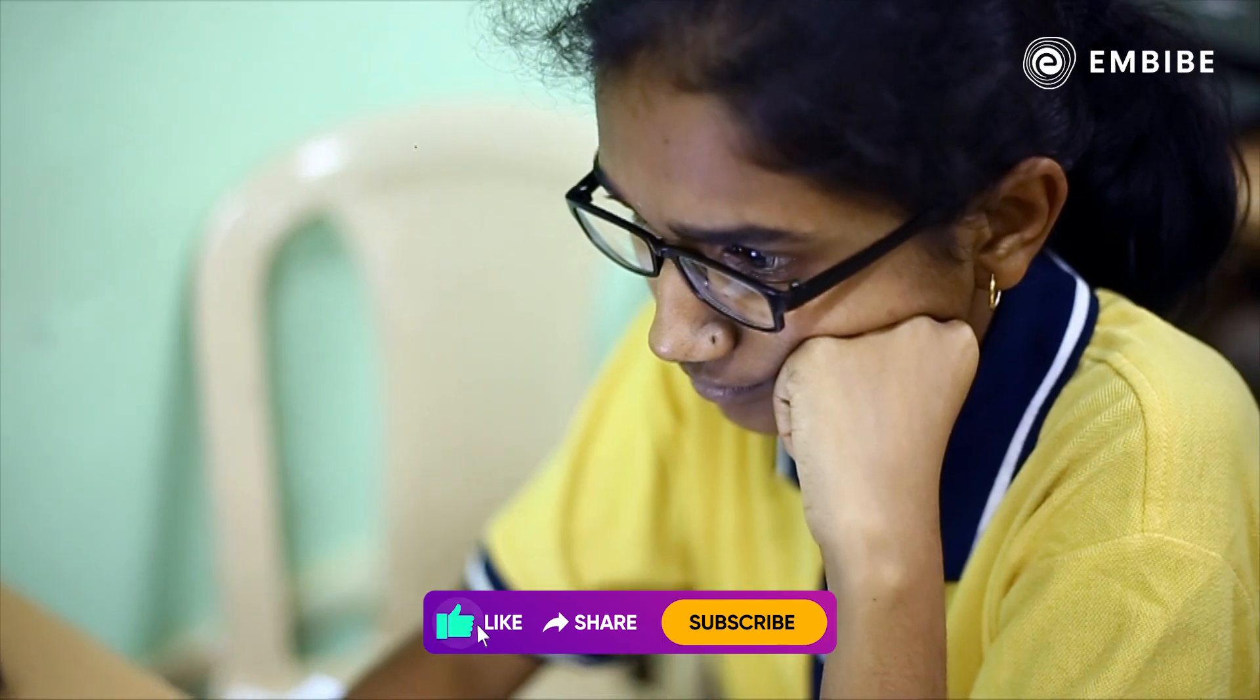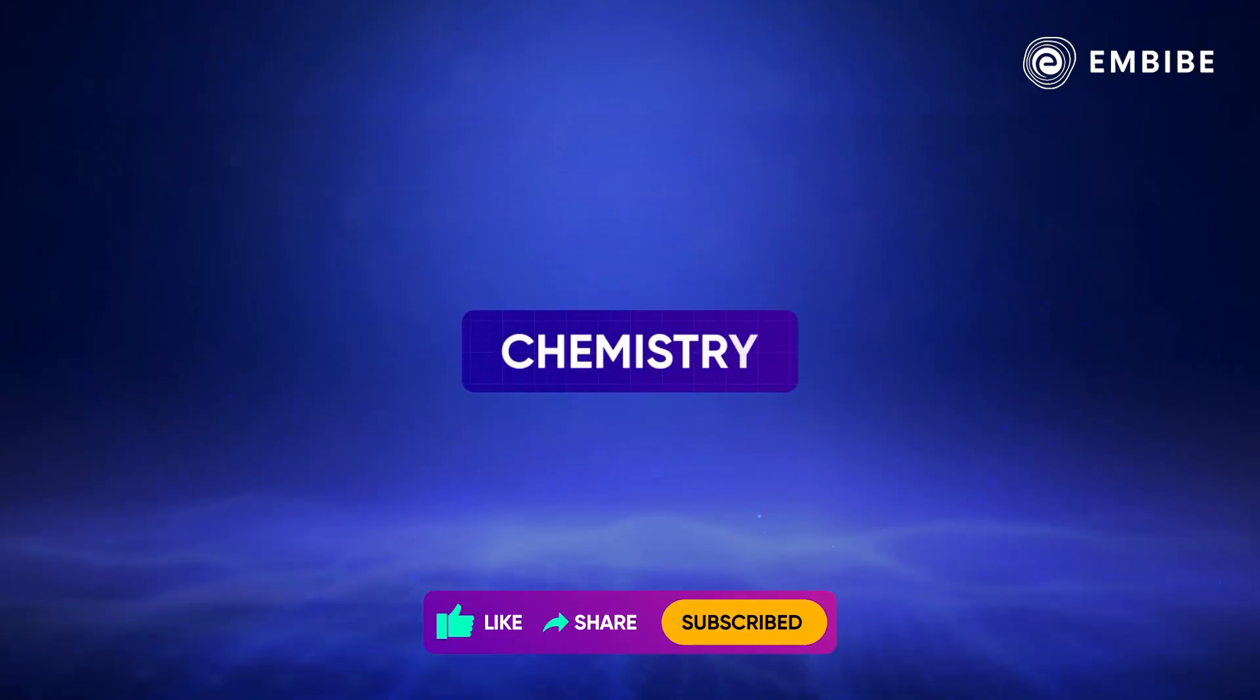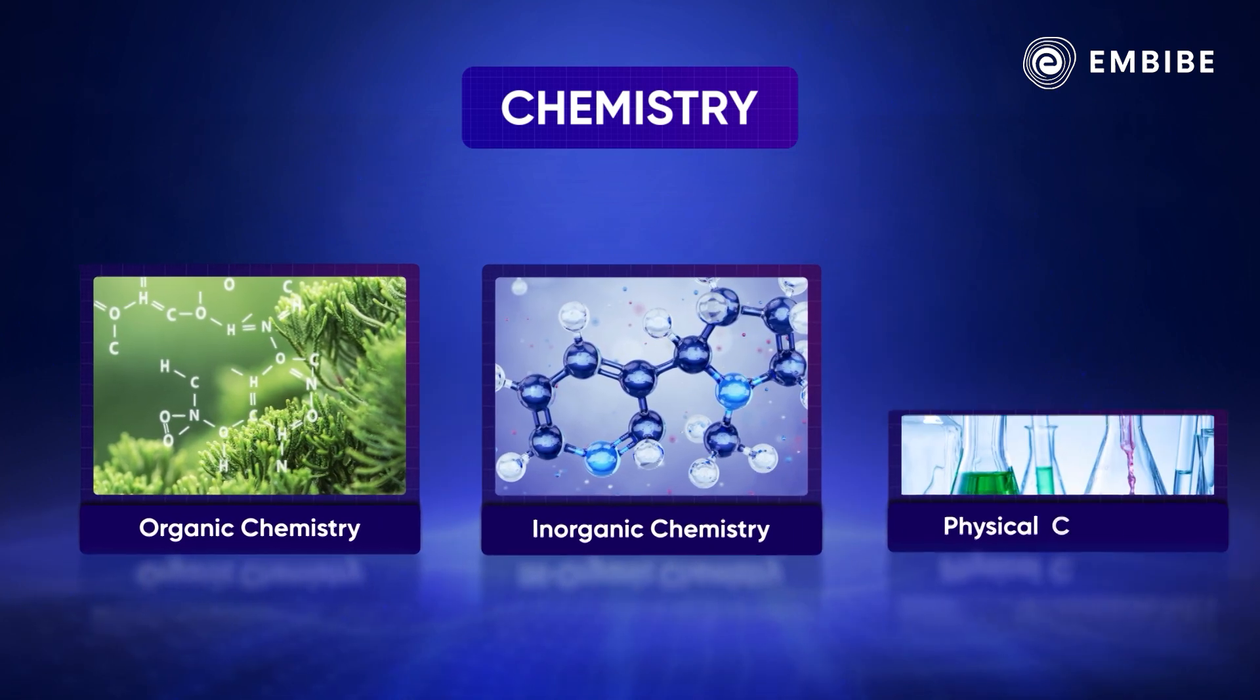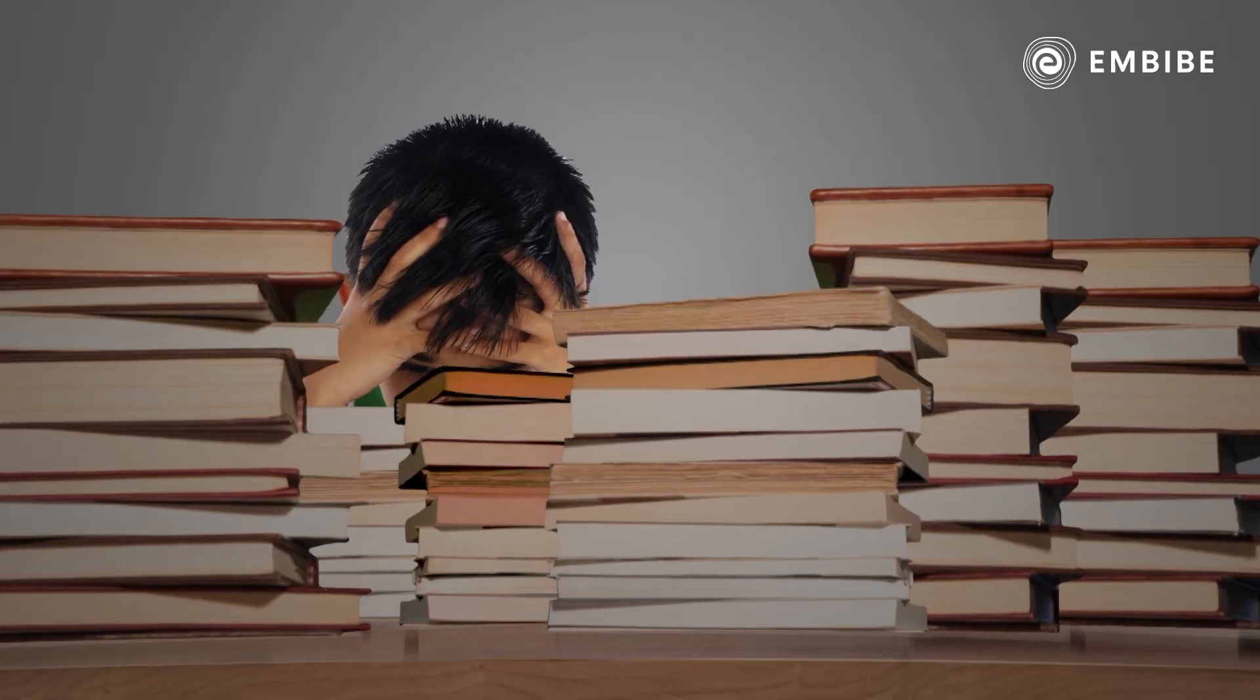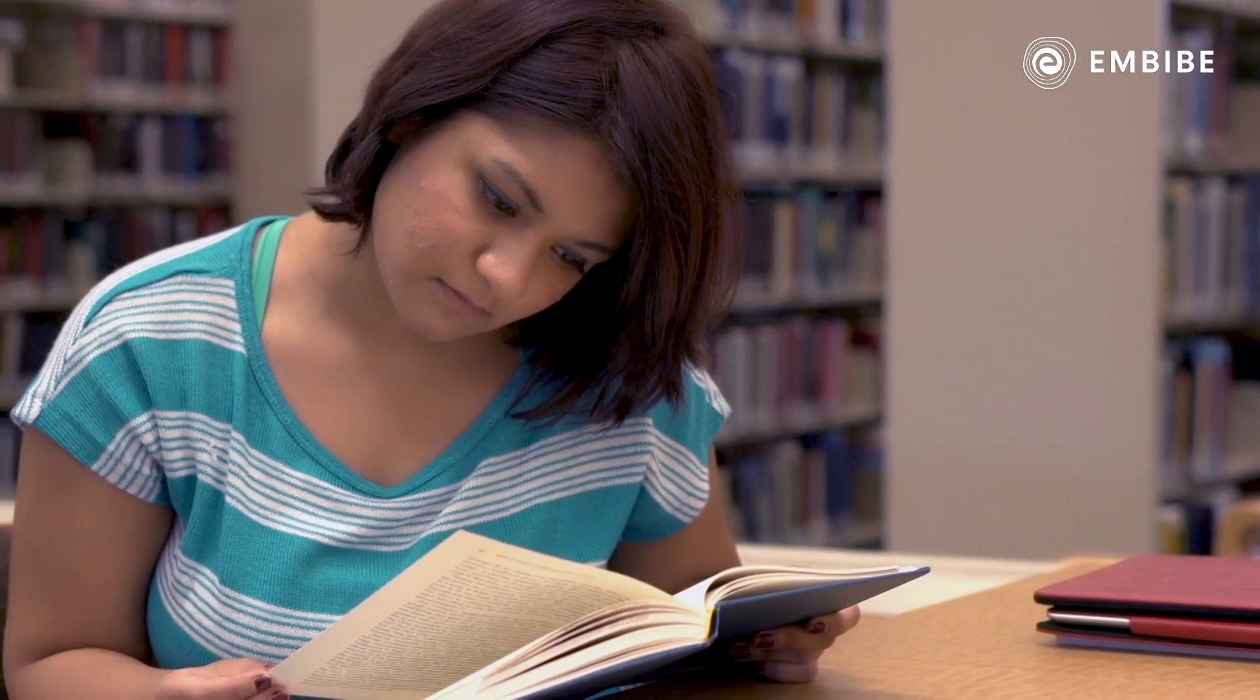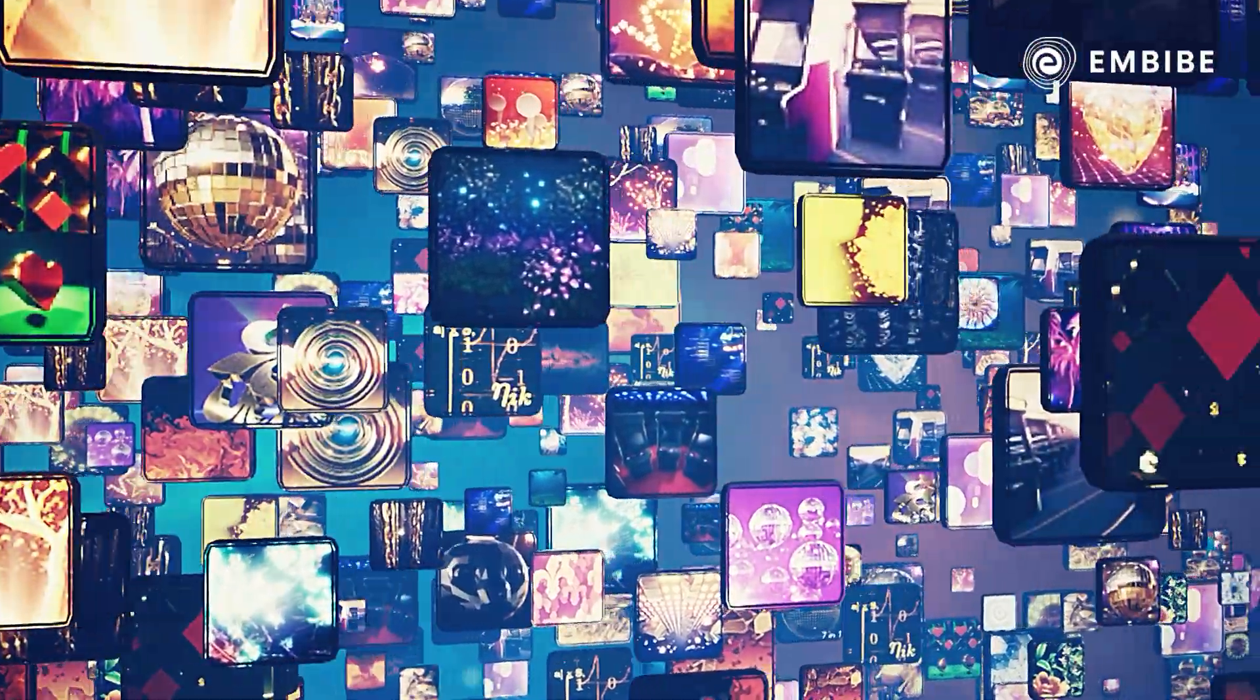Chemistry is not as simple as it used to be. Right from 11th standard, it has three units: organic, inorganic, and physical chemistry. You have to understand all of them and score well in exams. A lot of pressure, right? But you can still score good marks if you plan your study smartly.